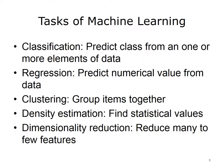There are a number of different tasks for which we use machine learning. One of the most common is classification, where we aim to predict the class from one or more elements of data. There is also regression, where we aim to predict a numerical value from the data. Another type of task is clustering, where we try to group various items together. There is also density estimation, where we attempt to determine how well the data fit a model statistically. Finally, there is dimensionality reduction, where we aim to take data sets of many dimensions and reduce them to fewer features for simplification or computational efficiency.